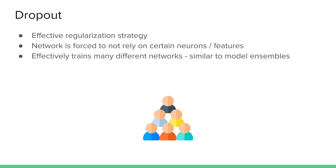The effect of applying dropout is similar to training an ensemble: each subset of active neurons acts like a separately trained network. When you deactivate dropout for inference, it's as if all the networks trained in parallel are now operating simultaneously.